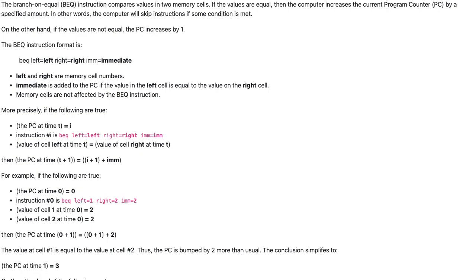The branch on equal instruction compares values in two memory cells. If the values are equal, then the computer increases the current program counter by a specified amount. In other words, the computer will skip instructions if some condition is met. On the other hand, if the values are not equal, the PC increases by 1.